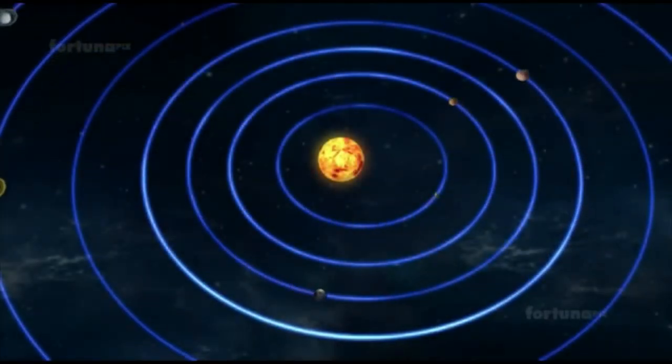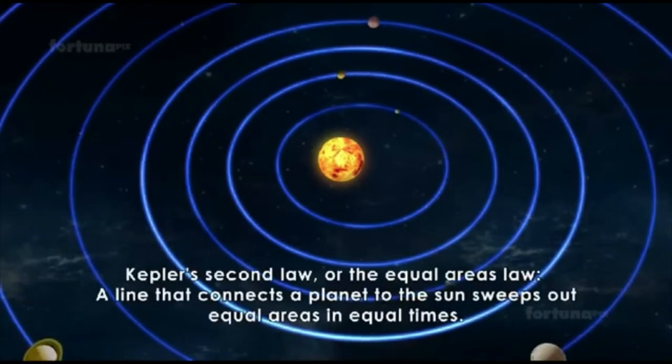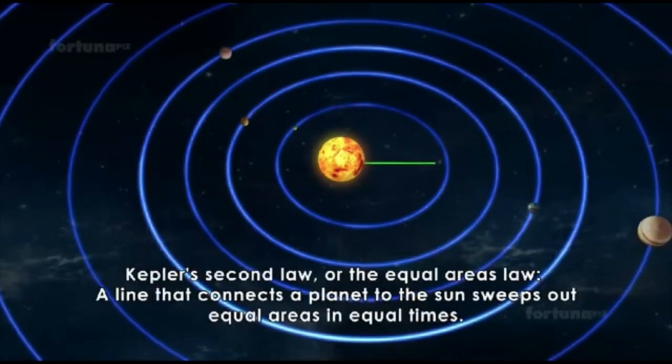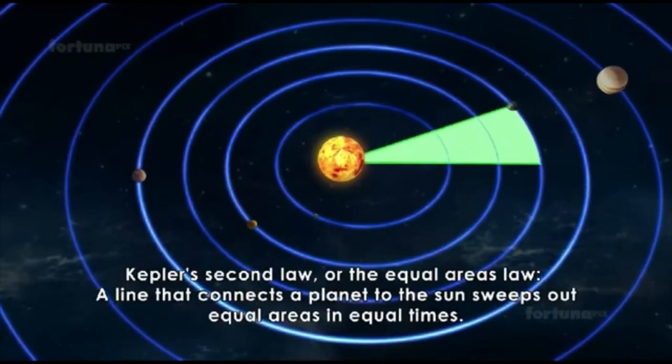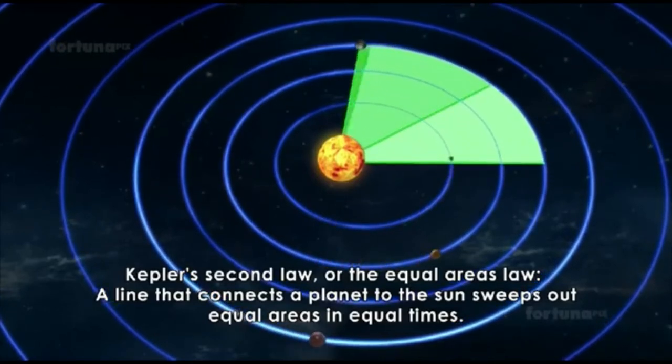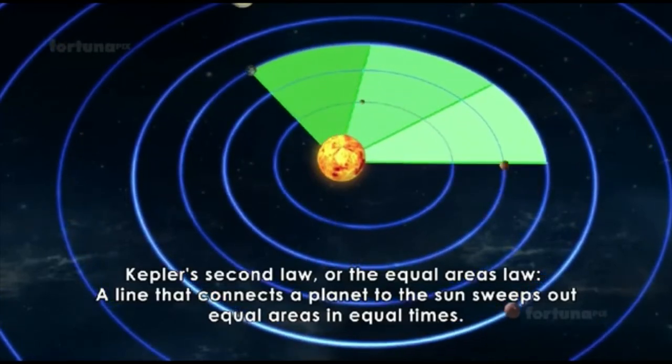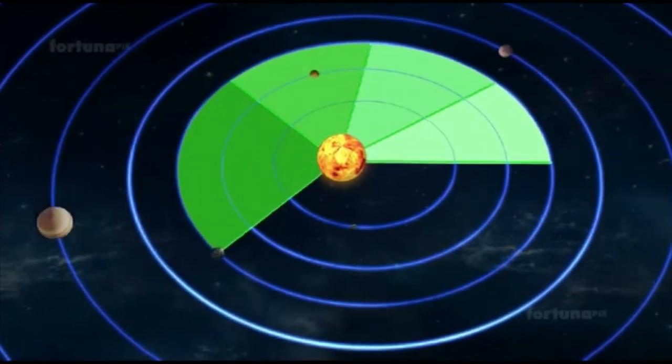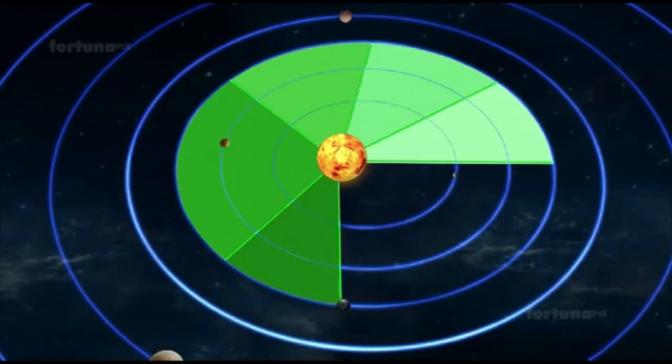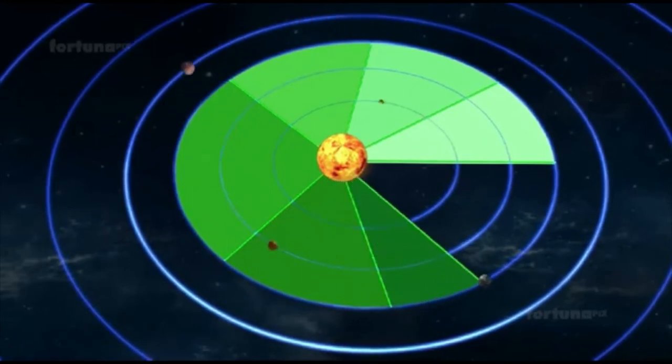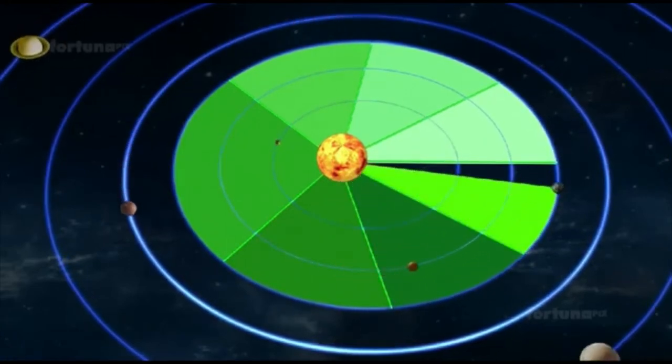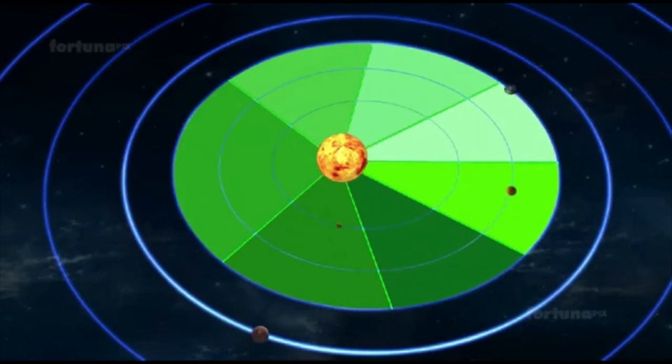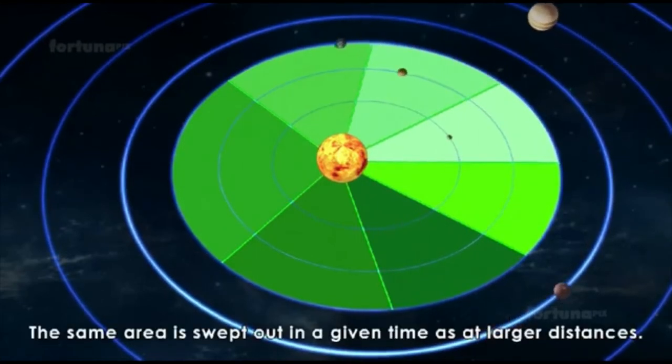Kepler's second law, or the equal areas law, states that a line that connects a planet to the Sun sweeps out equal areas in equal times. When the planet is closer to the Sun, it moves faster, sweeping through a longer path in a given time. The planet moves slower when away from the Sun, so the same area is swept out in a given time as at larger distances.